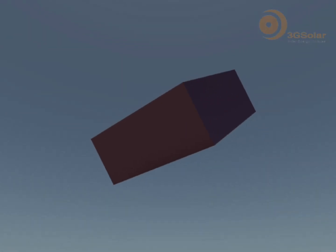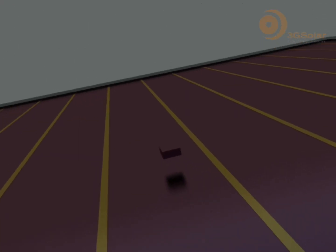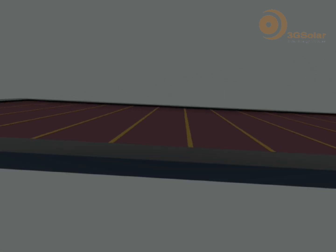This process occurs billions of times per second inside the cell to create an electrical current from sunlight.